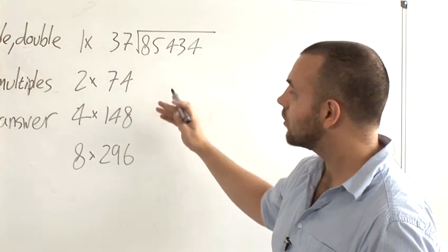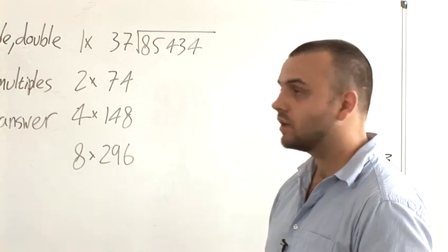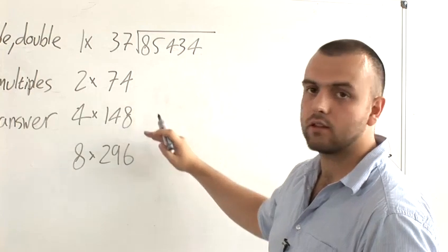So 37 times 2 is 74, times 4 is 148, and times 8 is 296. This is the double, then double again, then double again stage.